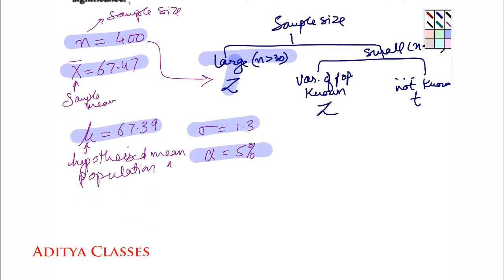Can I go ahead and find value of Z? Z is equal to x bar minus hypothesized mean upon standard deviation upon root n.